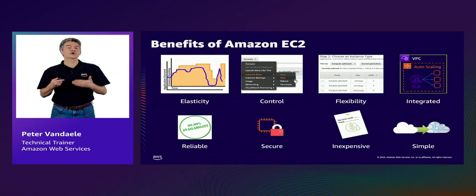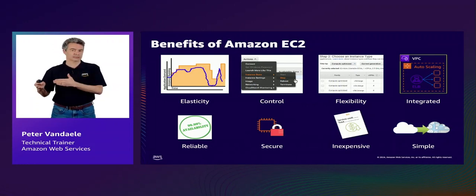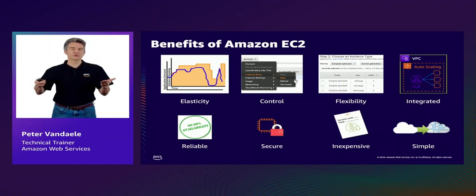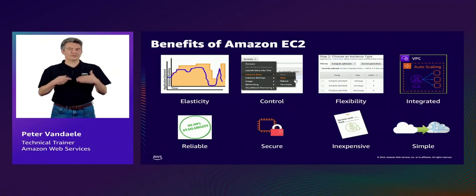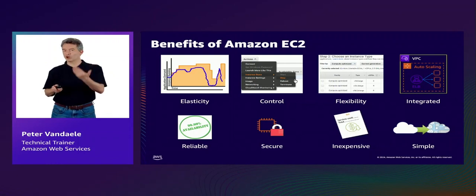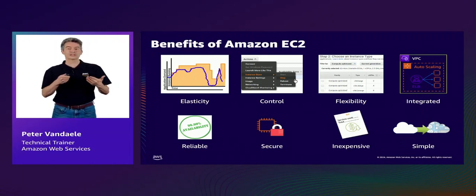This way, we pay only for the resources that we actually use. The second benefit is control. We have the ability to stop and start instances, reboot, or even terminate as we need. Just like with elasticity, this potentially helps to save cost. When we don't need our instances to be running, we scale down. But it also gives us the ability to size our fleet appropriately to the amount of traffic. EC2 gives you the flexibility to choose what you want when you need it.